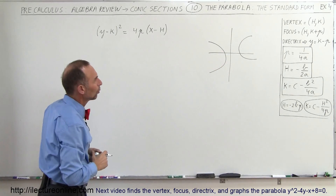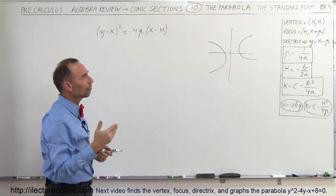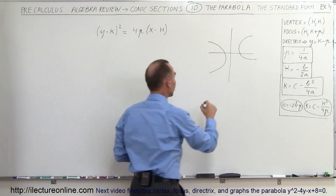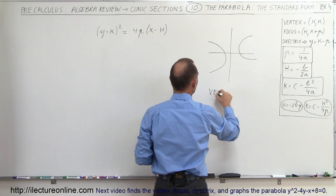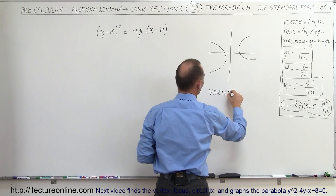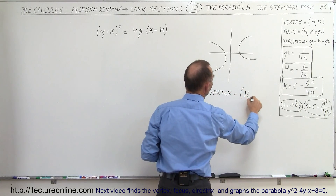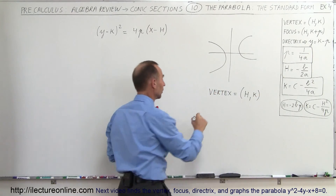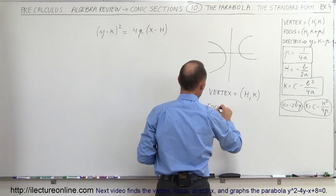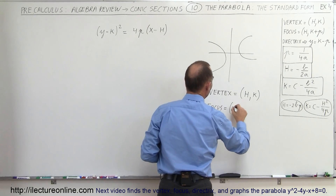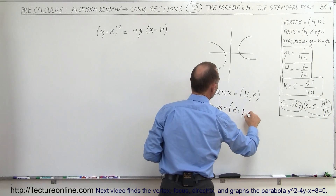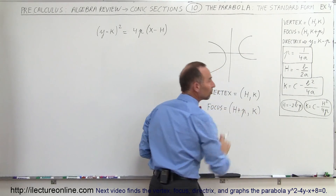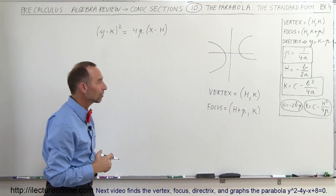So how does that change things? We need to find the vertex, the focus, and the directrix. In this case, the vertex will still be h and k — that has not changed. But now the focus is going to be h plus p, k. So instead of having k plus p, we have h plus p, moving to the x-coordinate.